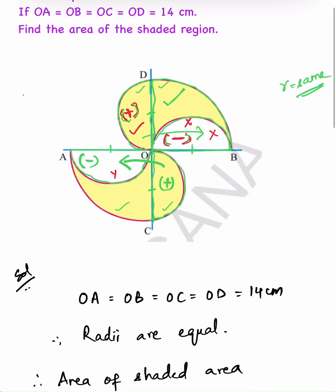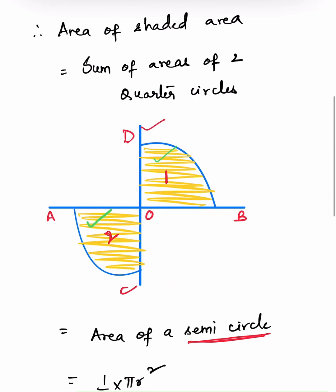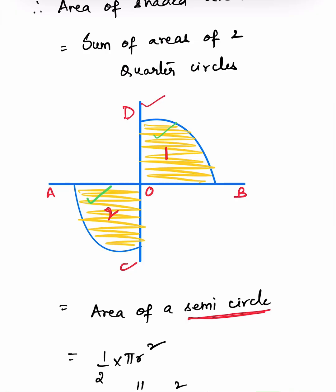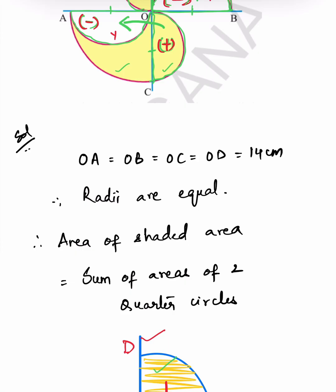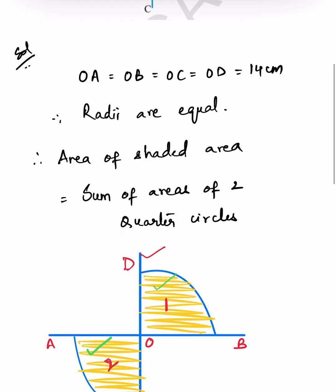After removing the areas in white and adding the semi-circles in yellow color in their place, the final figure we get is two quarter circles. The areas in minus have been removed and the plus semi-circles included. OA equal to OB equal to OC equal to OD, which is equal to 14 centimetres, so the radii are equal.